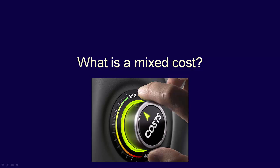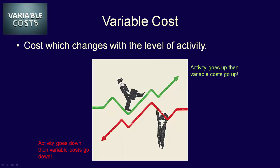What is a mixed cost? A variable cost is a cost that changes when the level of activity changes. If the level of activity goes up, the total variable cost will go up. If the level of activity goes down, the total variable cost will go down.